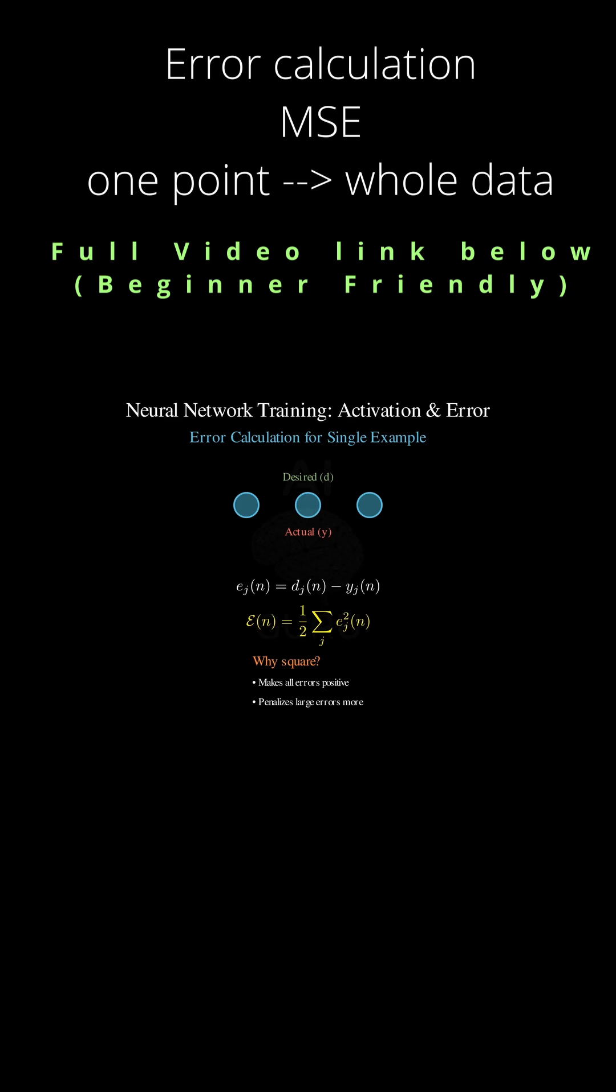But the one-half - is it just for mathematical neatness? Honestly, yes. When we get to gradient descent, we have to take the derivative of this error function, and the derivative of x squared is 2x, so the two cancels out the one-half. It's an algebraic trick to keep the calculus clean and avoid carrying around a constant factor in all the final equations.